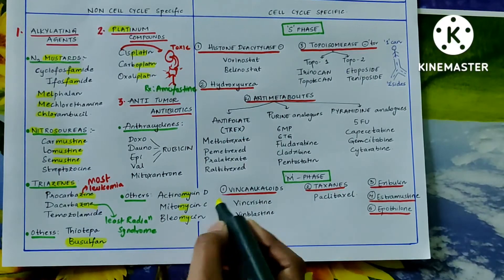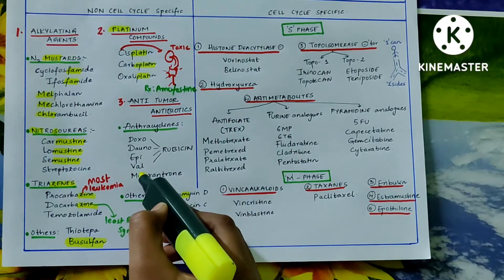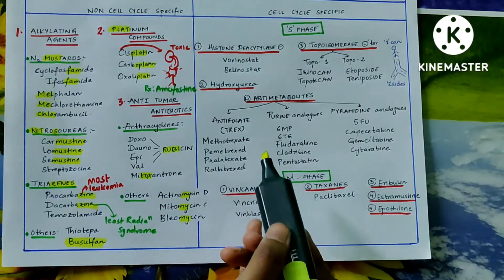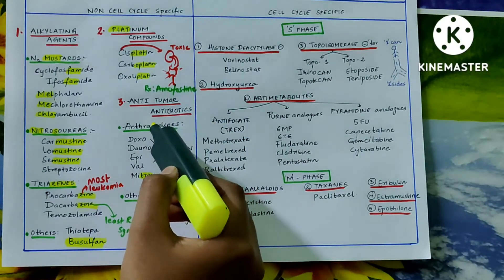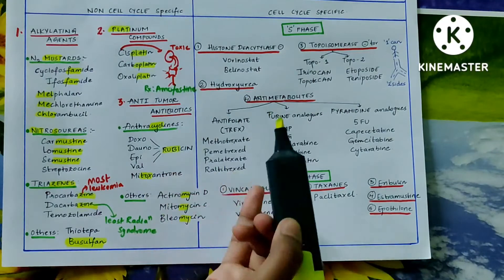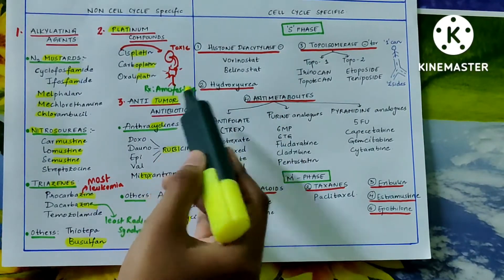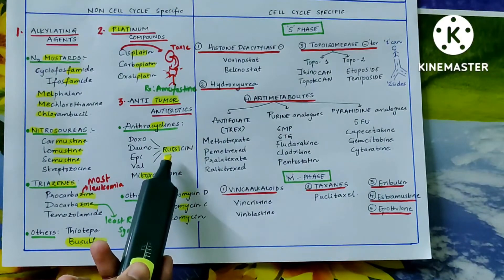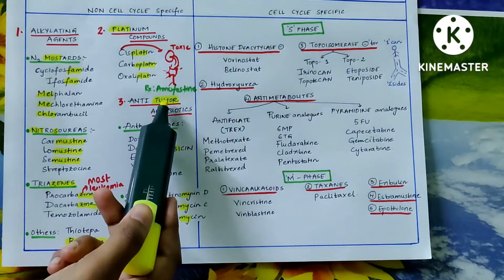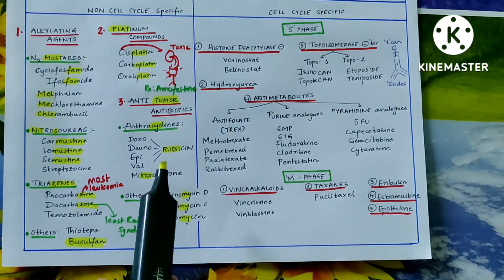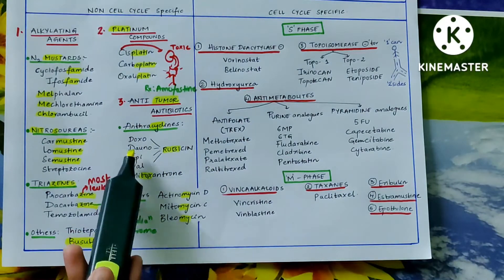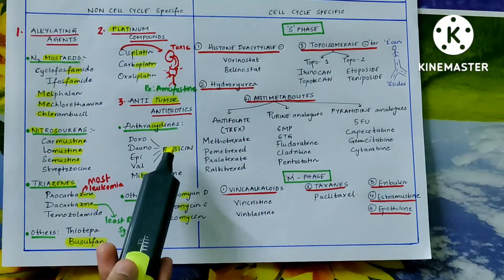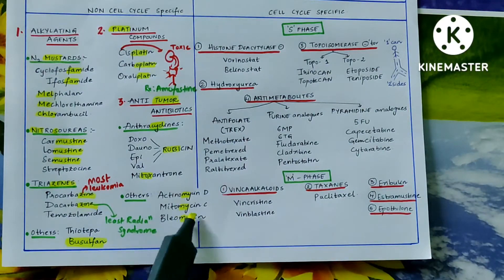Recapping anti-tumor antibiotics: actinomycin, mitomycin, and bleomycin are the 'mycins'; mitoxantrone is 'toxic'; doxorubicin is 'Ruby'; and the anthracyclines together come under anti-tumor antibiotics. All of these fall under non-cell cycle specific drugs.